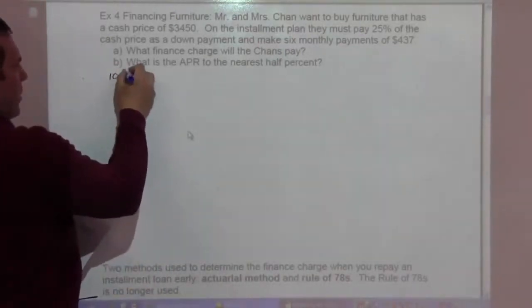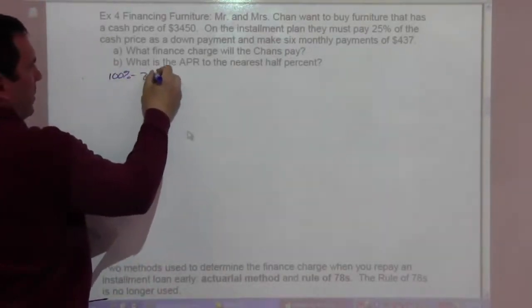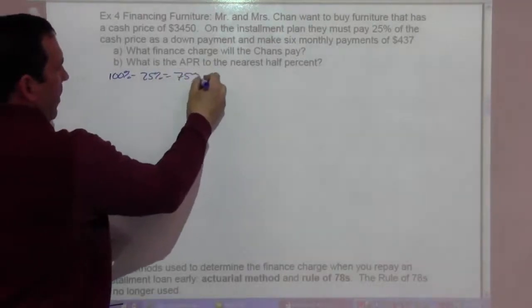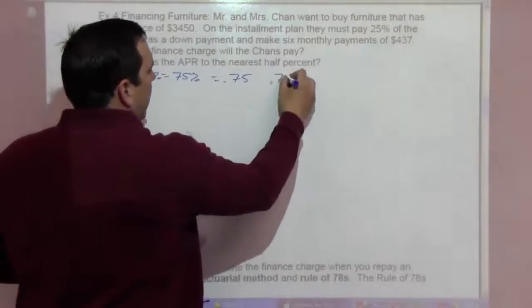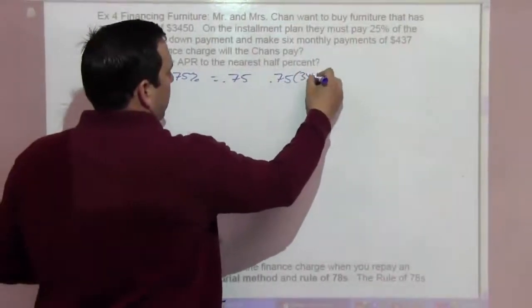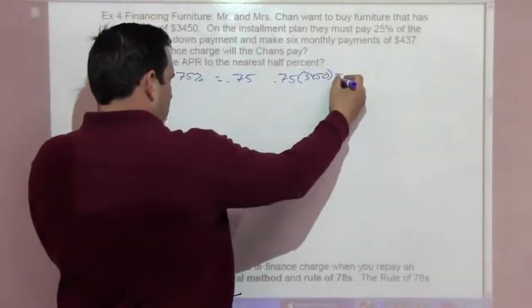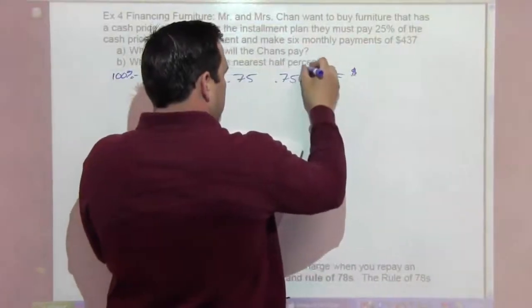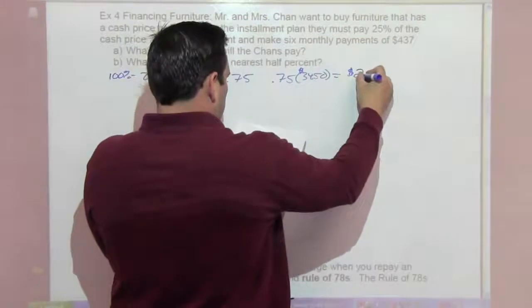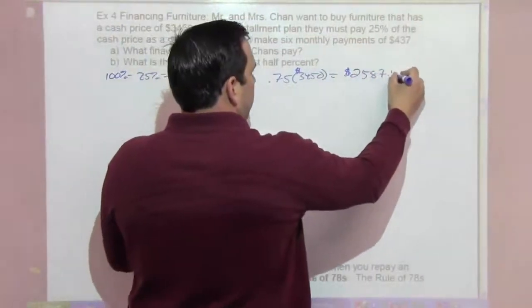Well, it's 100% minus 25% down, meaning they're financing 75%, and that would be 0.75. So 0.75 times $3,450 is going to be $2,587.50.